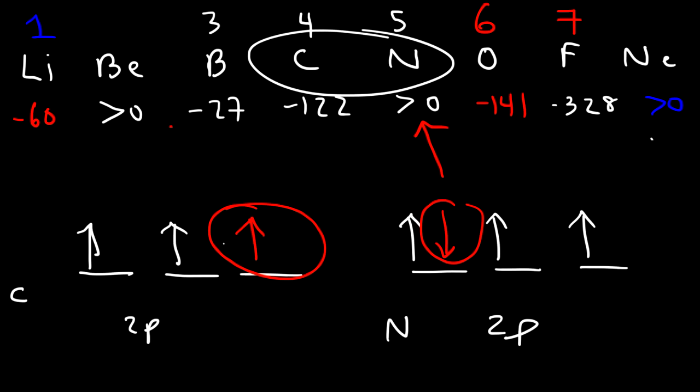Now granted, other elements in group 5 like phosphorus and arsenic are not endothermic. But group 4 tends to be more exothermic than group 5 due to the comparison of adding an unpaired versus a paired electron. That's reflected in the ordering 7, 6, 4, 5 — on average group 4 is more exothermic than group 5 because it's easier to add an unpaired electron than a paired one.